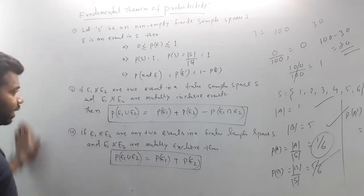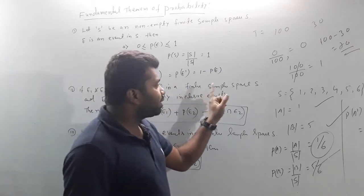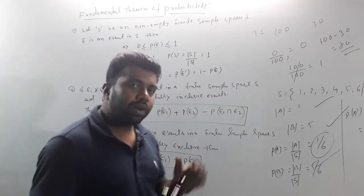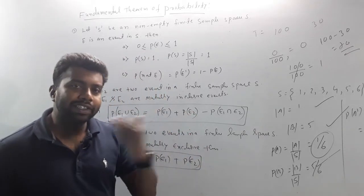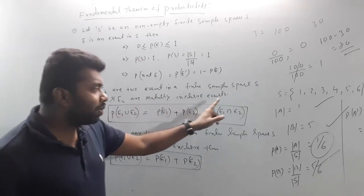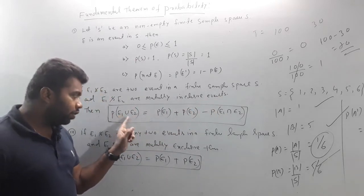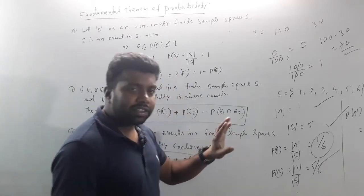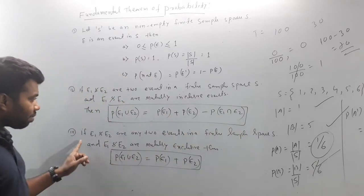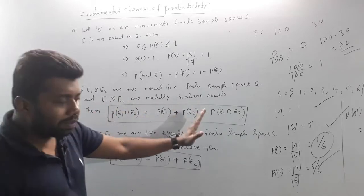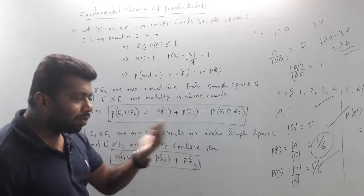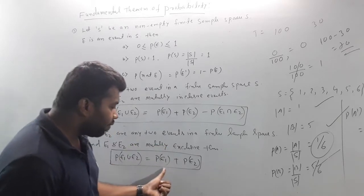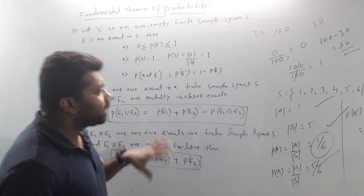Next, the second theorem. If E1 and E2 are two events in a finite sample space S, and E1 and E2 are mutually inclusive events, then the formula is P of E1 union E2 is equal to P of E1 plus P of E2 minus P of E1 intersection E2.